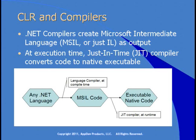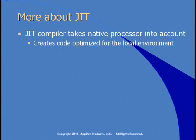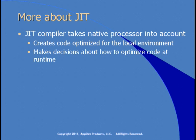If we start with any .NET language, the language compiler at compile time creates MSIL code. Then at runtime, there's a just-in-time compiler — often called a JIT compiler — that creates executable native code from that MSIL. You might think this is a drawback, but it actually adds some extra benefits. The JIT compiler takes the native processor into account and creates code optimized for the local environment. The JIT compiler can make decisions about how to optimize your code at runtime.